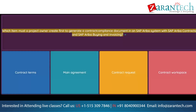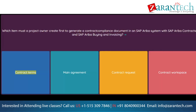Question: Which item must a project owner create first to generate a contract compliance document in an SAP Ariba system with SAP Ariba Contracts and SAP Ariba Buying and Invoicing? Option 1: Contract terms. Option 2: Main agreement. Option 3: Contract request. Option 4: Contract workspace.